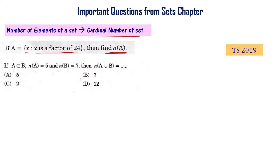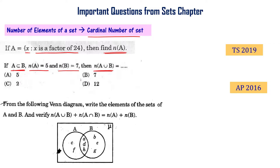If A is a subset of B, and n(A) equals 5 and n(B) equals 7, then what is the value of n(A∪B)? This is from the AP final exam 2016. From the following Venn diagram, write the elements of sets A and B, and then verify that n(A∪B) plus n(A∩B) equals n(A) plus n(B).